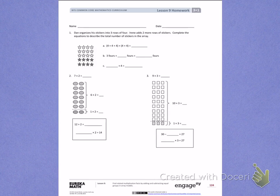Number 1. Dan organizes his stickers into 3 rows of 4. Irene adds 2 more rows of stickers. Complete the equations to describe the total number of stickers in the array.